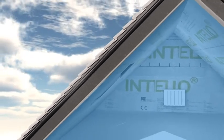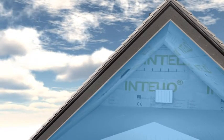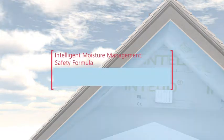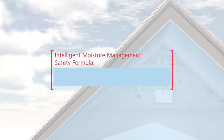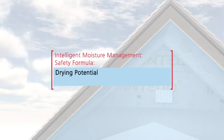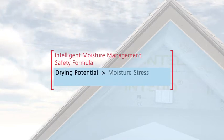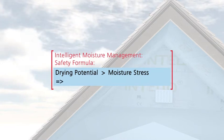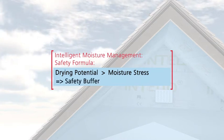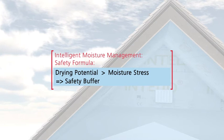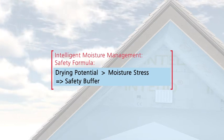There's one simple rule that has to be followed to make sure that a thermal insulation structure is safe: to reliably prevent structural damage, the drying potential must always be higher than the maximum moisture stress. The greater the difference between the moisture stress and the drying potential, the greater the safety buffer for building owners, planners, and builders.